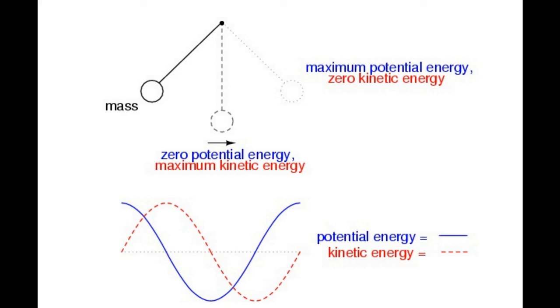As the mass swings back the other way, it passes quickly through a point where the string is pointed straight down. At this point the potential energy, height, is at zero and the kinetic energy, motion, is at maximum.